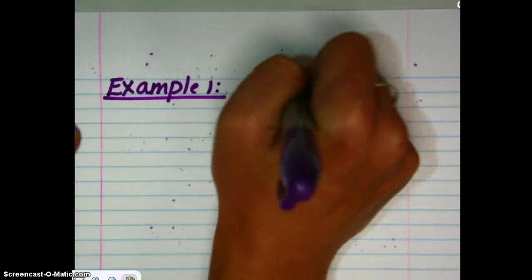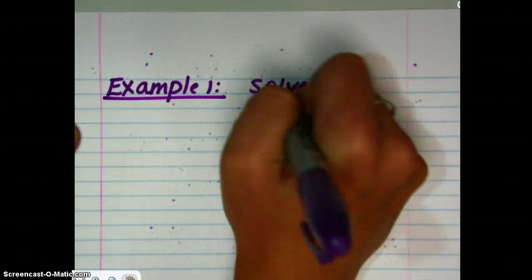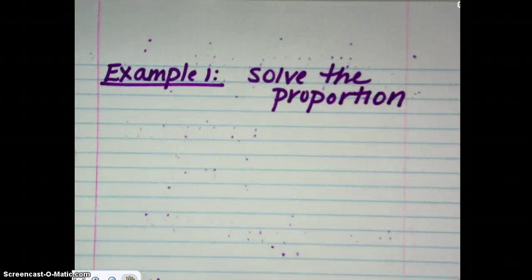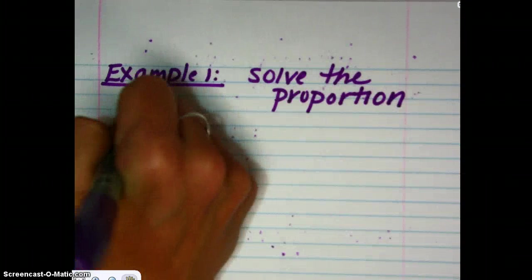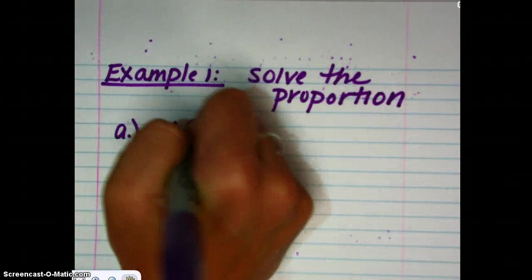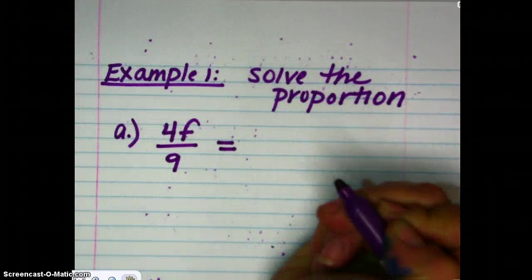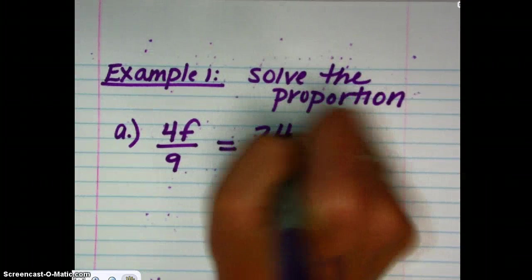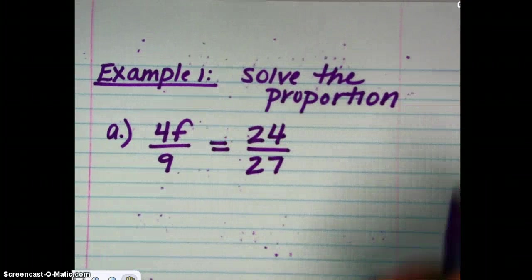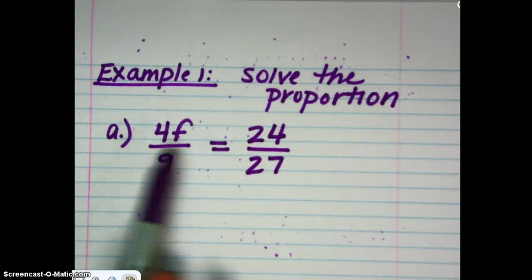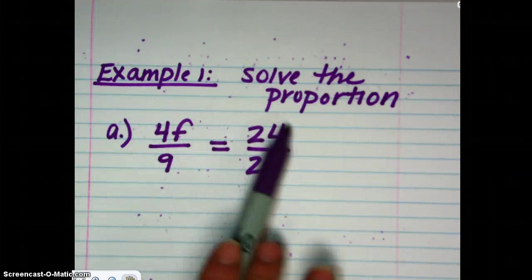So, let's take a look at this first example. In this example, we're going to solve the proportion. Actually, we're going to do two together. So, first, let's take a look at this proportion. 4F over 9 is being shown to be equivalent to 24 over 27. So, here we have a proportion. We have an equation showing that this fraction, or this ratio, is equivalent to this fraction, this ratio here.